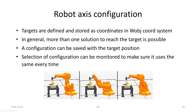The robot axis configuration: usually there is more than one solution to reach a target. A configuration can be saved with the target position — that is done when we have actually taught the robot how to move to that position, automatically more or less. For a given center point, we can have this configuration, this configuration, or this configuration — they are all different and more or less fit for the purpose. The system does not know which should be used, so we have to teach the system which to use.